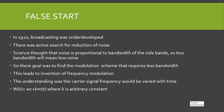In the 1920s broadcasting was underdeveloped. At that stage there was active research going on for the reduction of noise. Scientists and engineers thought that since noise is proportional to the bandwidth of the side bands, less bandwidth will mean less noise. So they were trying to find the modulation scheme that requires less bandwidth, and this leads to the invention of frequency modulation.